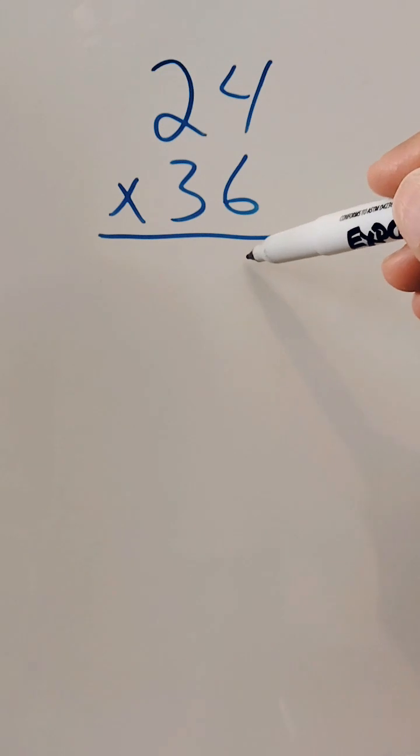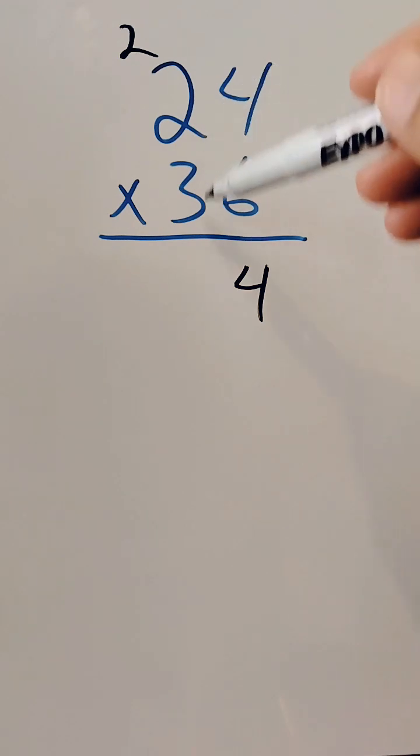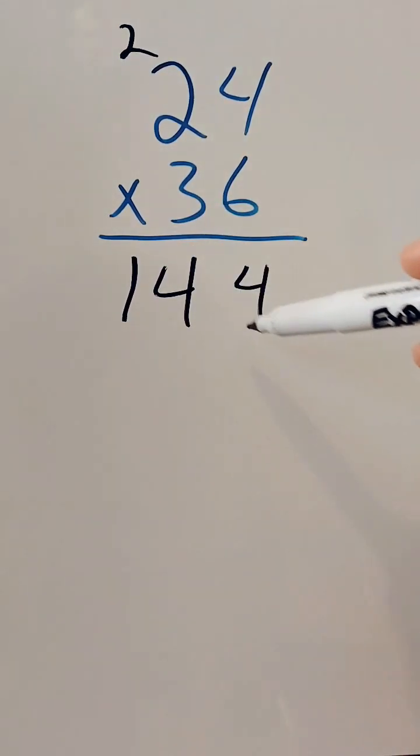Let's do 6 times 4 is 24. We're going to carry our 2, put down our 4, carry our 2. 6 times 2 is 12, plus 2 is 14. So we have 144.